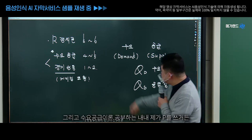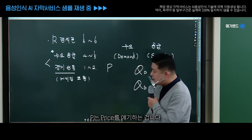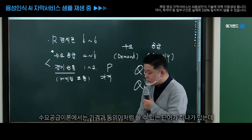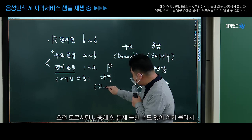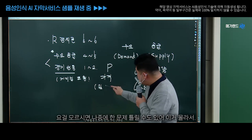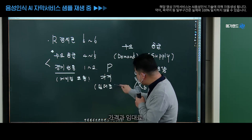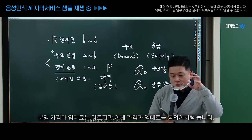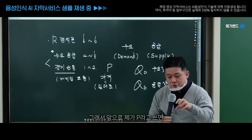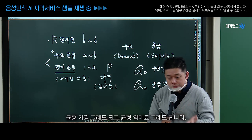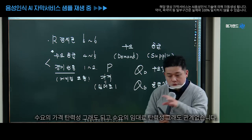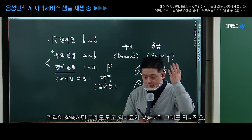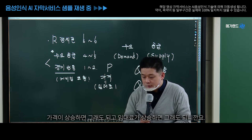수요공급이론 공부하는 내내 제가 P를 쓰거든 P는 price를 얘기하는 겁니다. Price는 가격 하셔도 되고요, 수요공급이론에서는 가격과 동의어처럼 쓸 수 있는 단어가 하나 있는데, 바로 임대료라고 부르기도 합니다. 가격과 임대료는 분명 다르지만 동의어처럼 씁니다. 앞으로 제가 P라고 쓰면 균형 가격 그래도 되고 균형 임대료 그래도 됩니다. 수요의 가격 탄력성 그래도 되고 수요의 임대료 탄력성 그래도 관계없습니다.